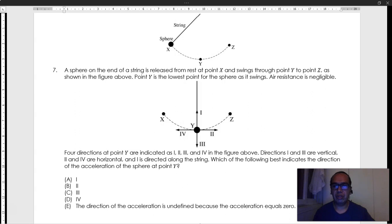Four directions at point Y are indicated as 1, 2, 3, and 4 in the figure above. Directions 1 and 3 are vertical, 2 and 4 are horizontal, and 1 is directed along the string. Which of the following best indicates the direction of the acceleration of the sphere at point Y?